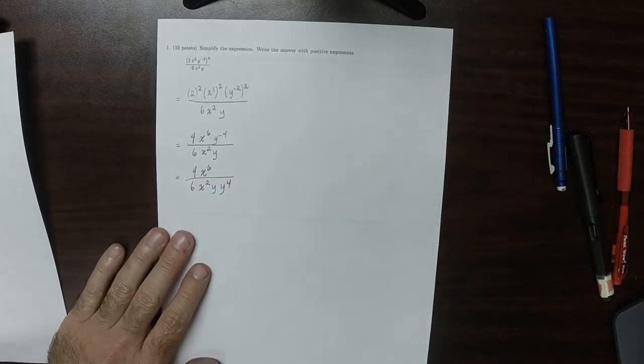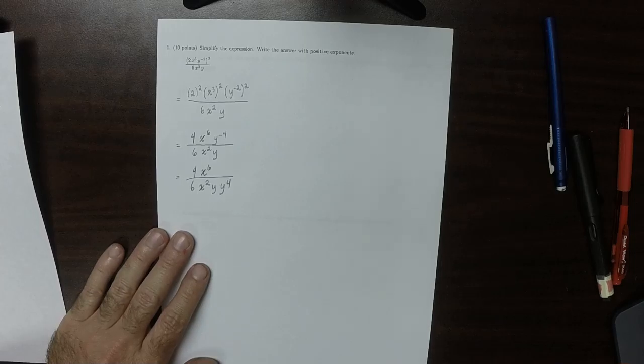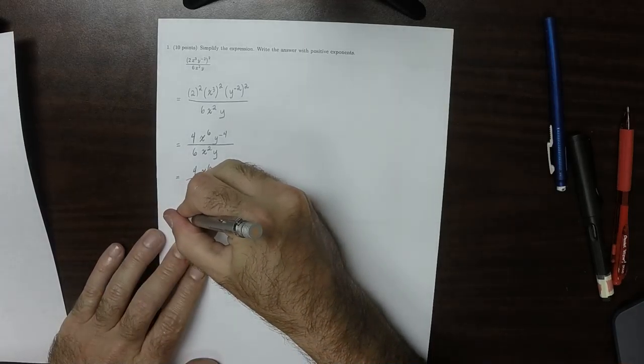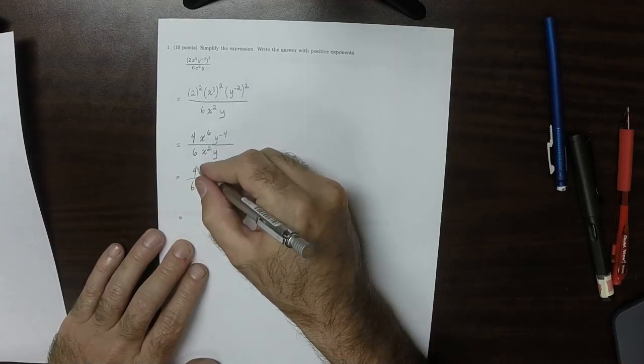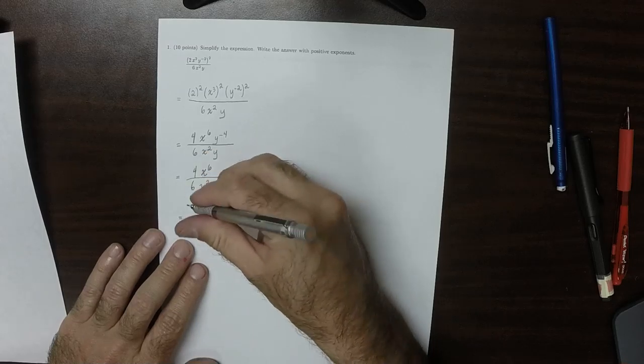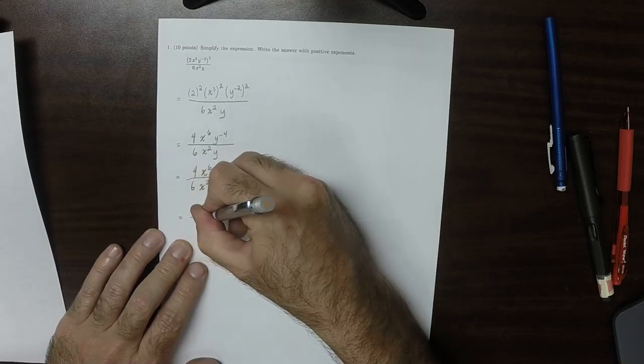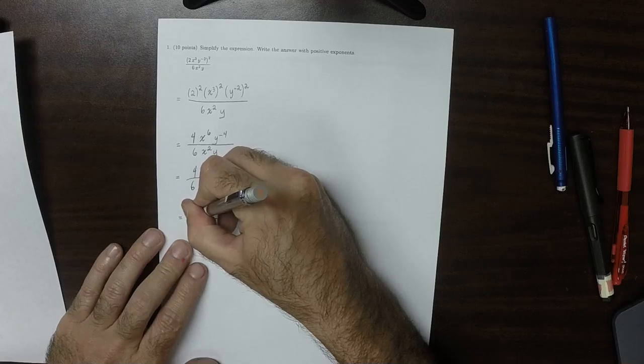So now all of the exponents are positive, but the expression can be simplified. So as for the constants, 4 and 6, we can make a 2 up here.